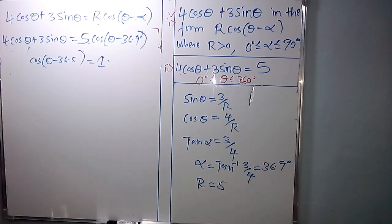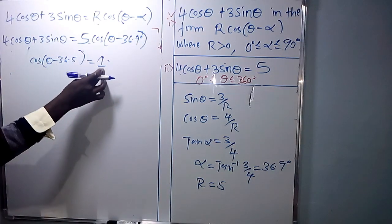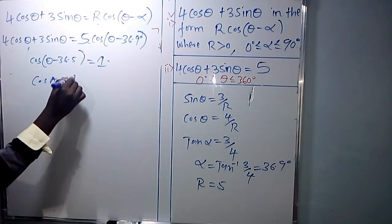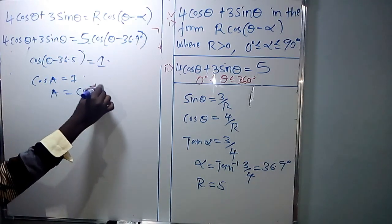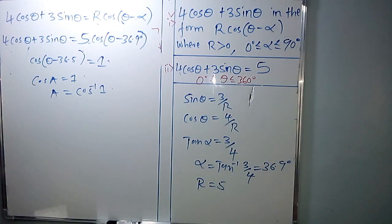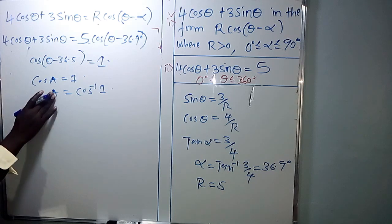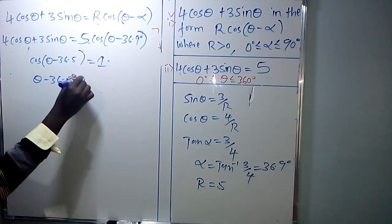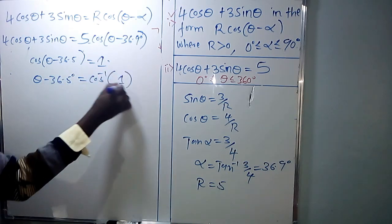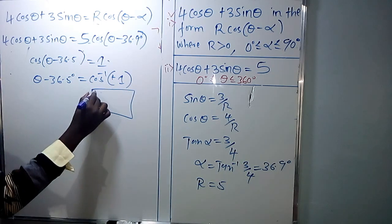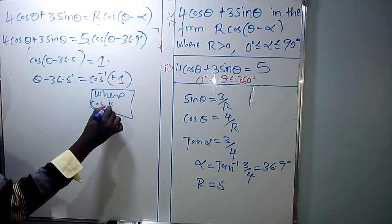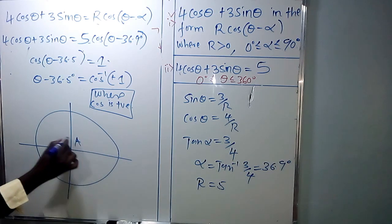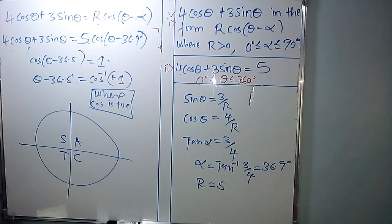To get theta minus 36.9 degrees, let A equal theta minus 36.9 degrees, so cos A equals 1. Therefore A equals the cos inverse of 1. Since 1 is positive, we look for quadrants where cosine is positive. The cos inverse of 1 is 0 degrees.